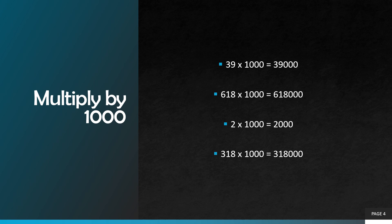Question number two: six hundred and eighteen multiplied by one thousand. We are going to add three zeros in our answer. Six hundred and eighteen multiplied by one is equal to six hundred and eighteen, so our correct answer will be six hundred and eighteen thousand.